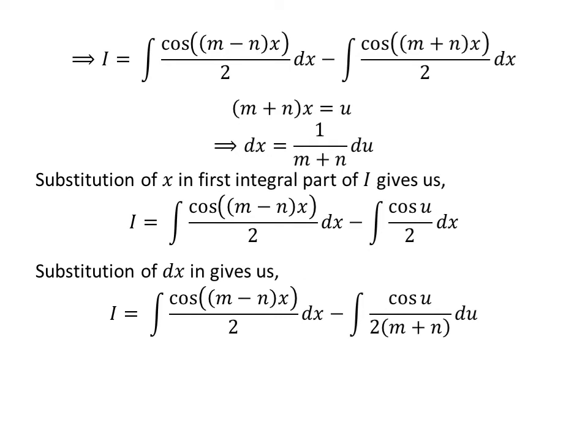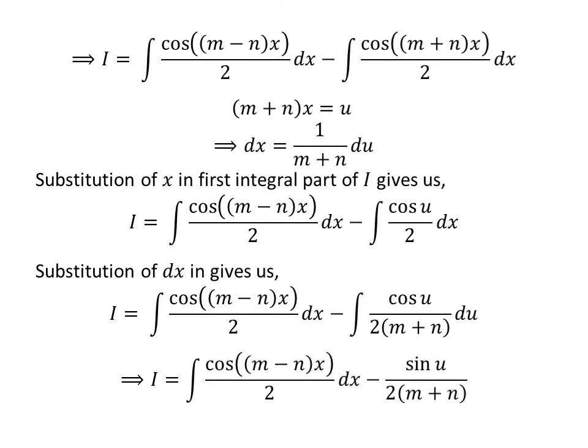Now, let us replace dx by our newly found value, 1 upon (m + n) times du. So, I is equal to the integral of cos((m − n)x) upon 2 with respect to x, minus the integral of cos(u) upon 2(m + n) with respect to u. Since the integral of cos(u) is sin(u), we get I equal to the integral of cos((m − n)x) upon 2 with respect to x, minus sin(u) upon 2(m + n).